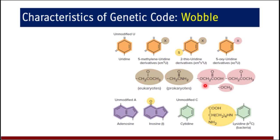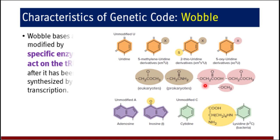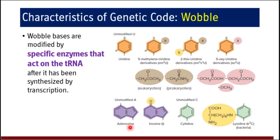The wobble bases are modified by specific enzymes that act on tRNA and modify the nucleotide base at the 5-prime end of the anticodon. It is the anticodon which is chemically modified, not the codon. Uridine is modified to 5-methyl-5-methylene uridine, 2-thiouridine, and 5-oxyuridine. Adenosine is modified to inosine, and cytidine is modified to lysidine. These are the chemical modifications of nucleotides at the 5-prime end of the anticodon.